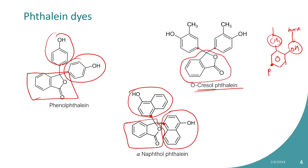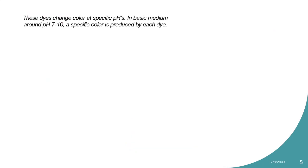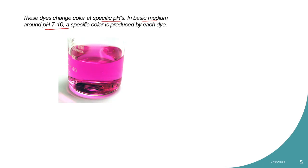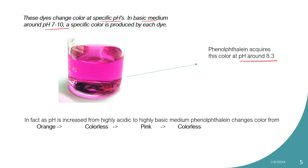These are thalein dyes and they change color in the basic medium, each producing a characteristic color. The thalein dye test can be given by phenol, cresol, and naphthol. These dyes change color at specific pH values in basic medium, around pH 7 to 10. For phenolphthalein specifically, the color is pink, and phenolphthalein changes color from orange to colorless, then pink, then colorless again as pH increases.